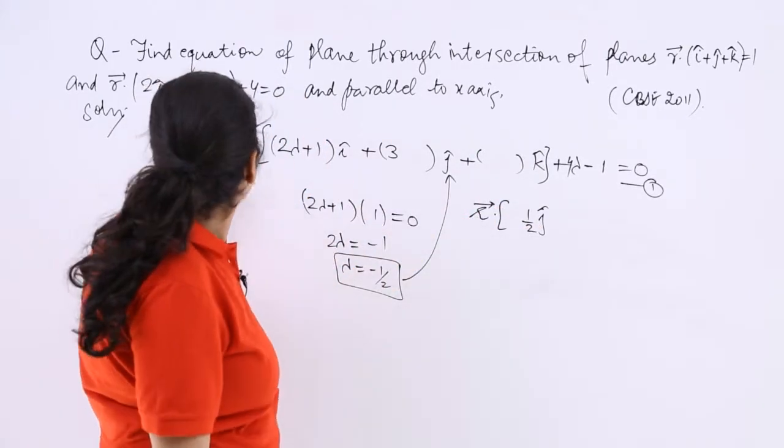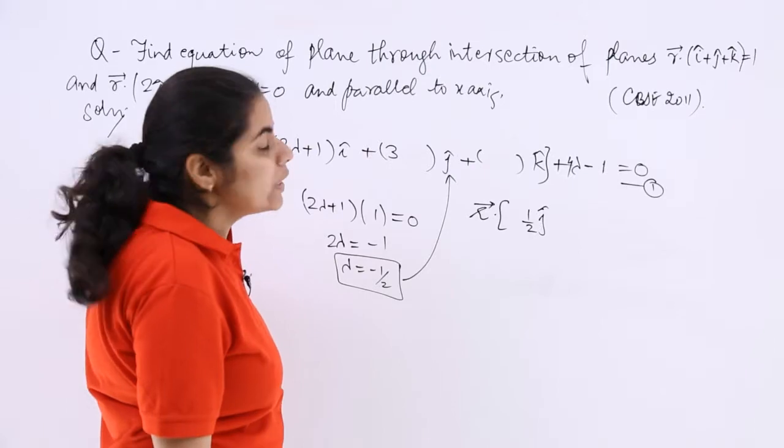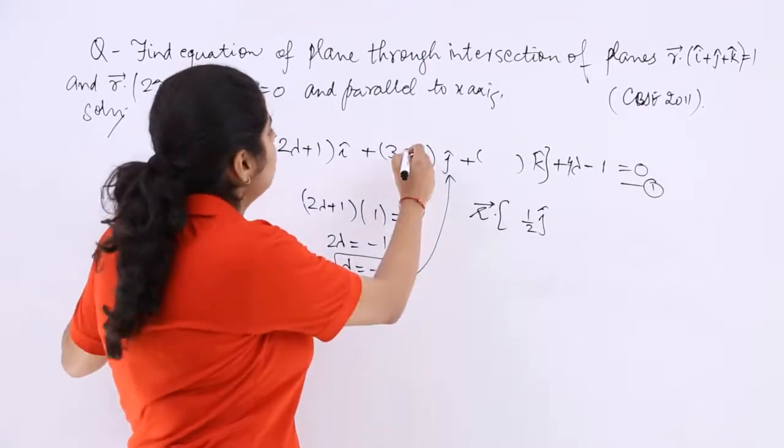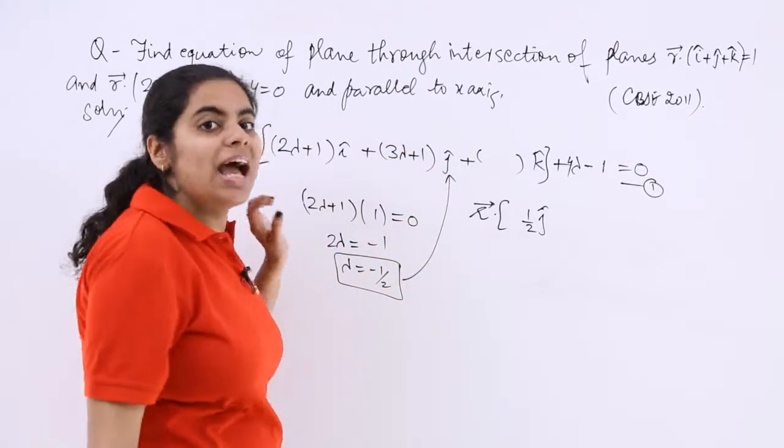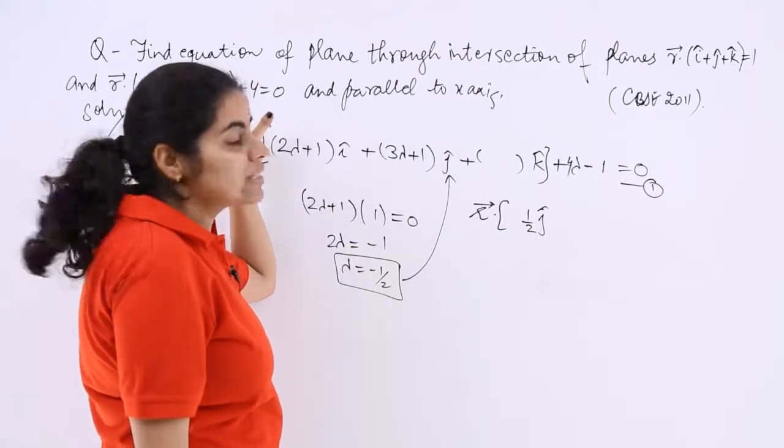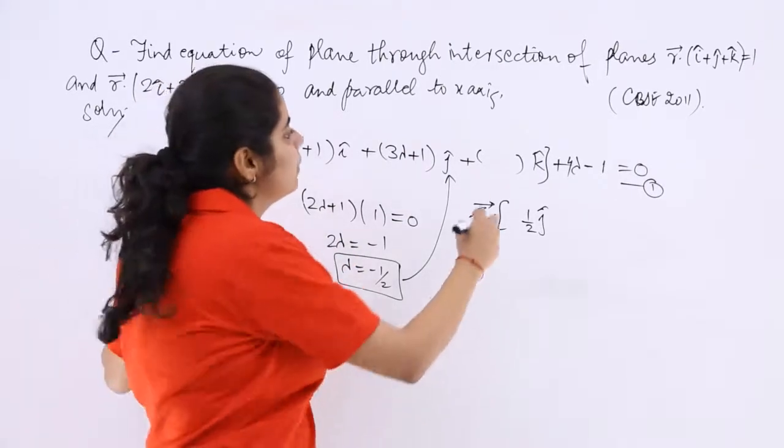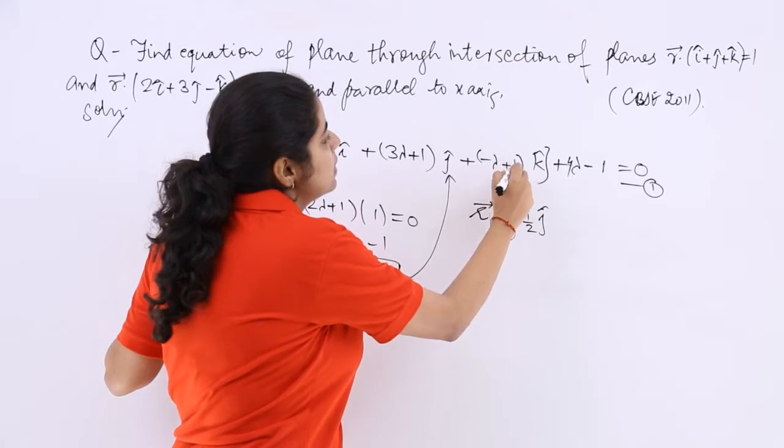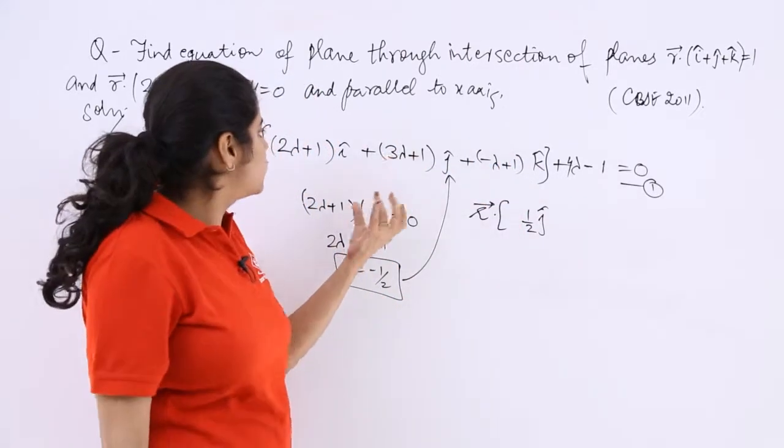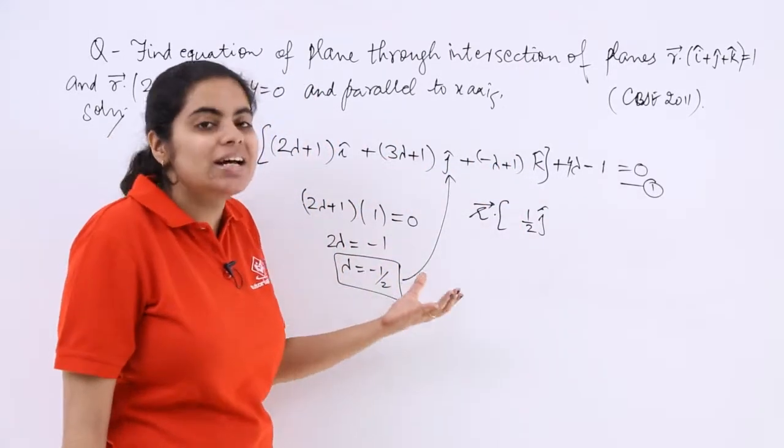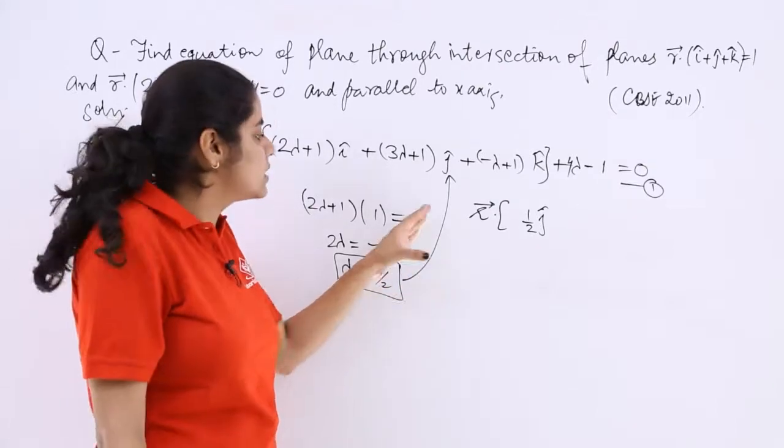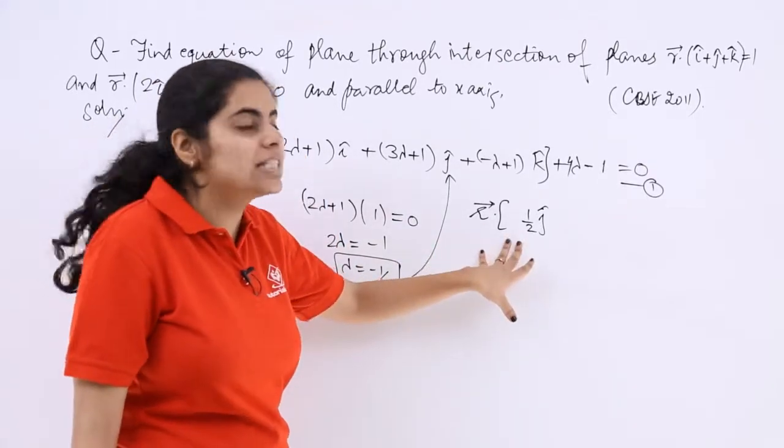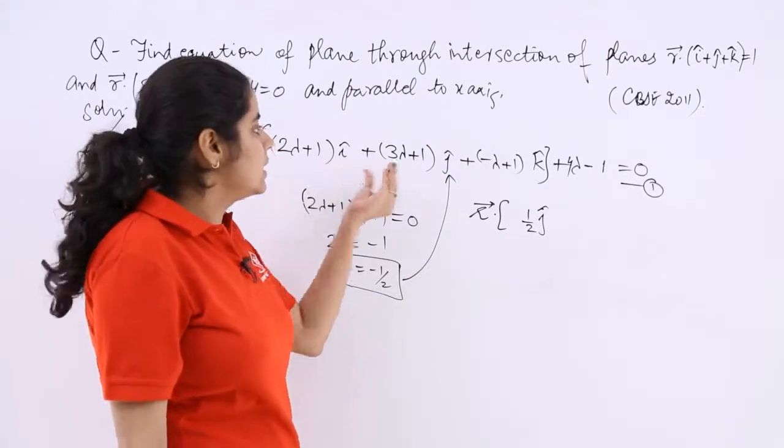The lambda will be associated with this second equation, so this will be 3 lambda plus 1 and similarly it will be minus lambda plus 1. When you put everything equal to 0, by chance the answer does not change because it's related to i cap, but please take care otherwise the answer will differ here. Now this is 0.